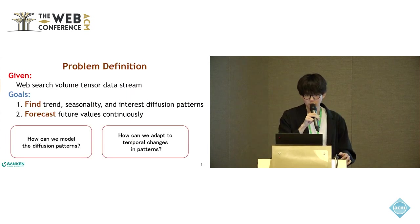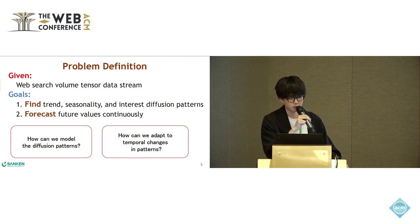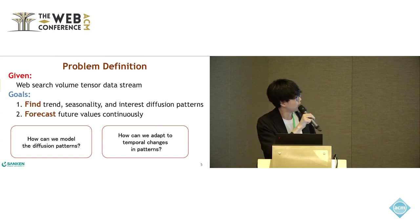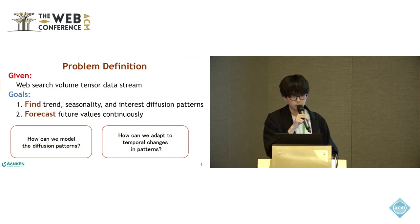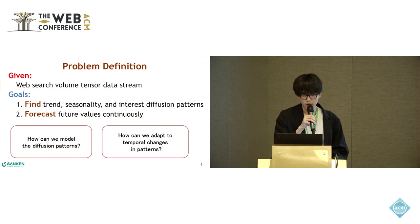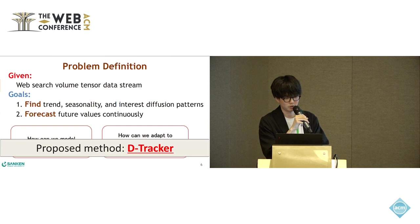So this is the problem definition. Given web search volume data streams, we want to find trends, seasonality, and diffusion patterns, and forecast future values. To achieve these goals, we have to address two problems: how can we model the diffusion patterns, and how can we adapt to temporal changes in patterns? We propose the D-Tracker method.